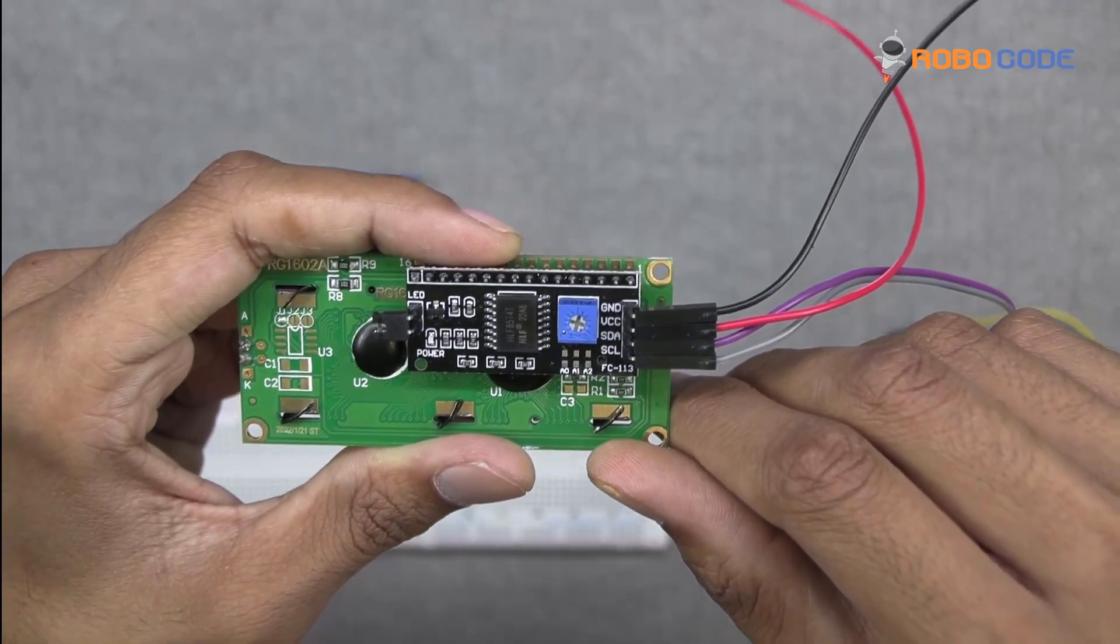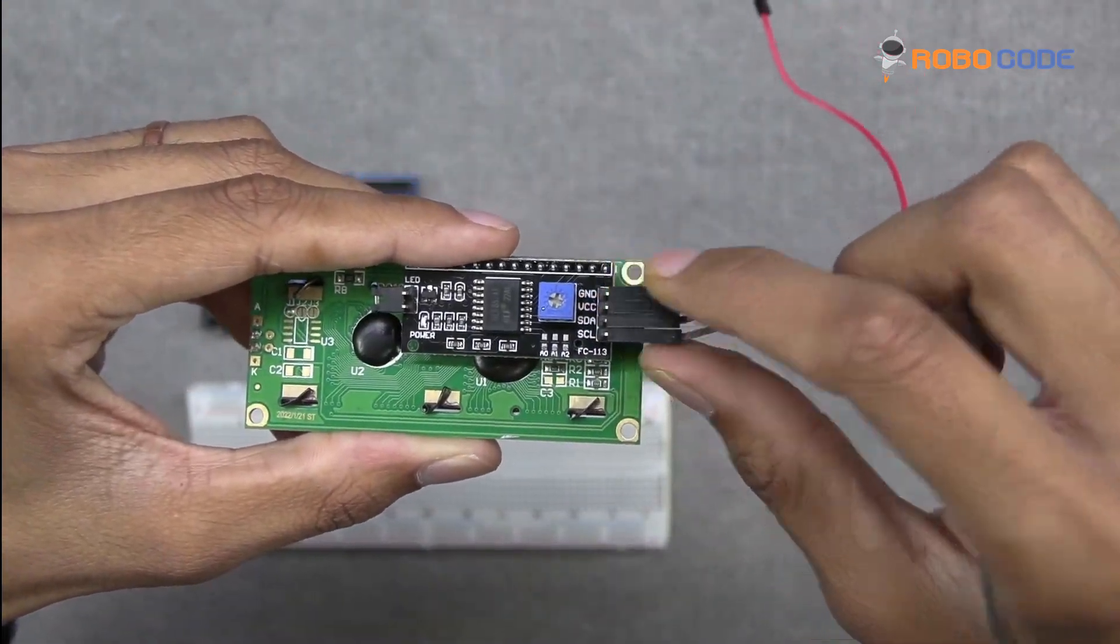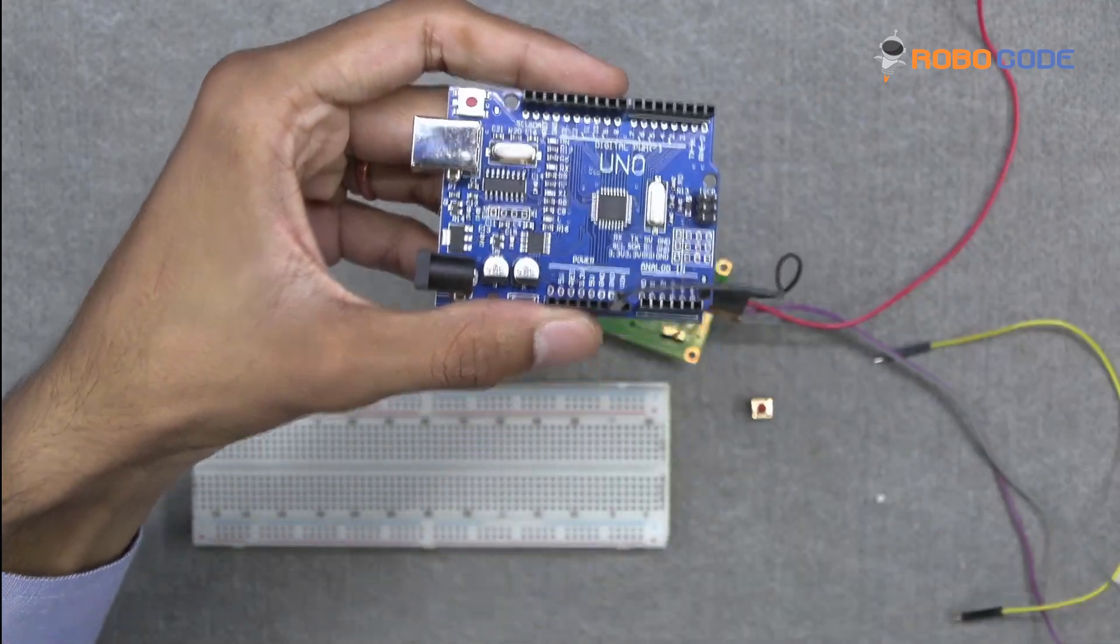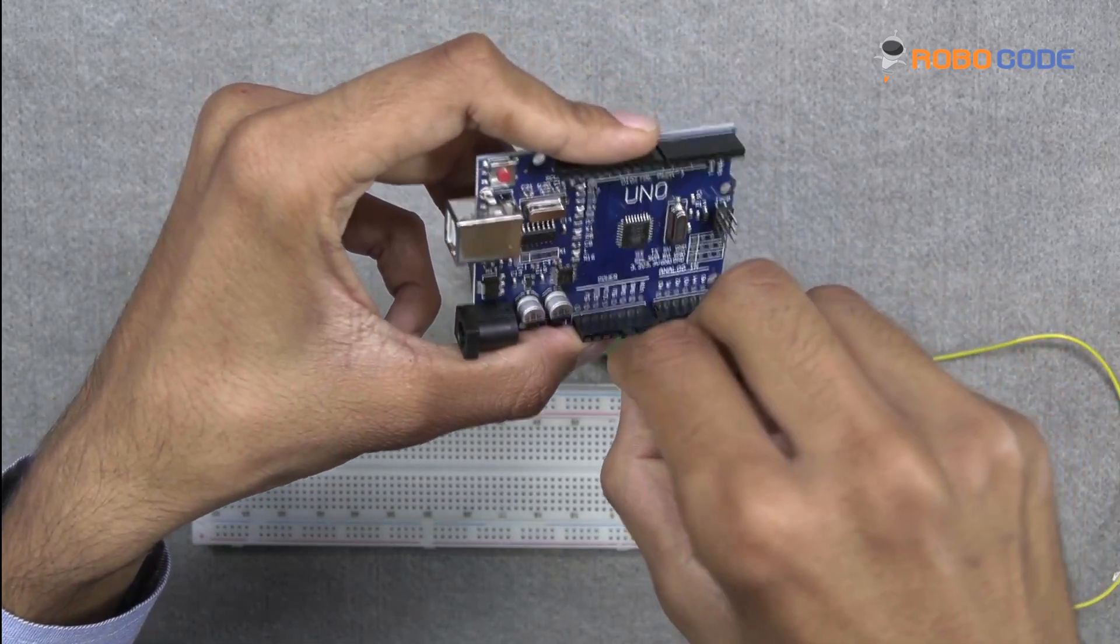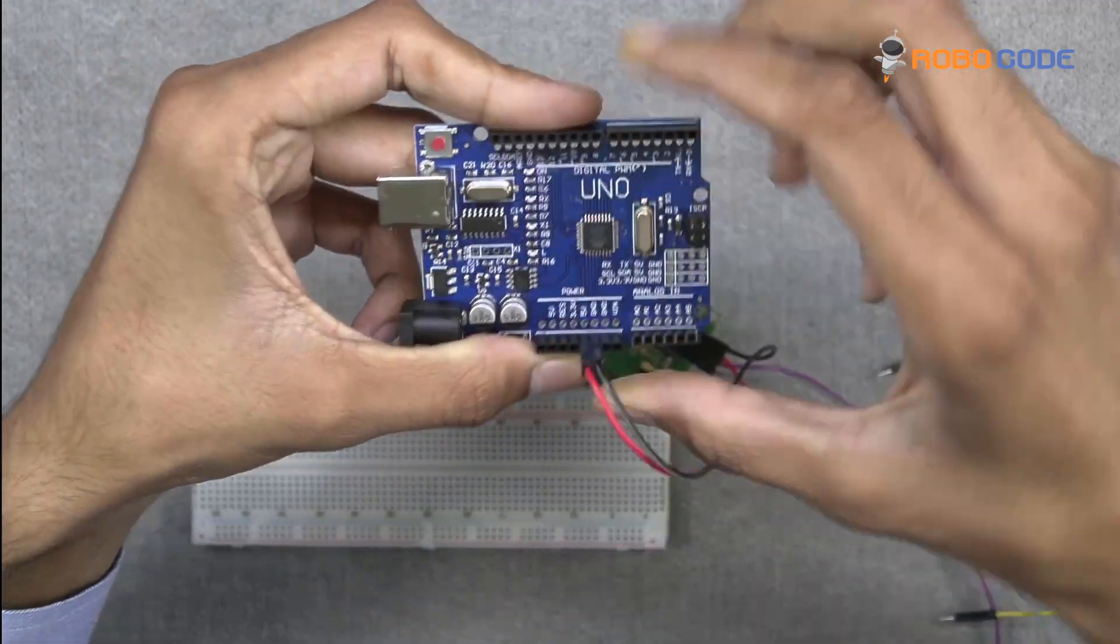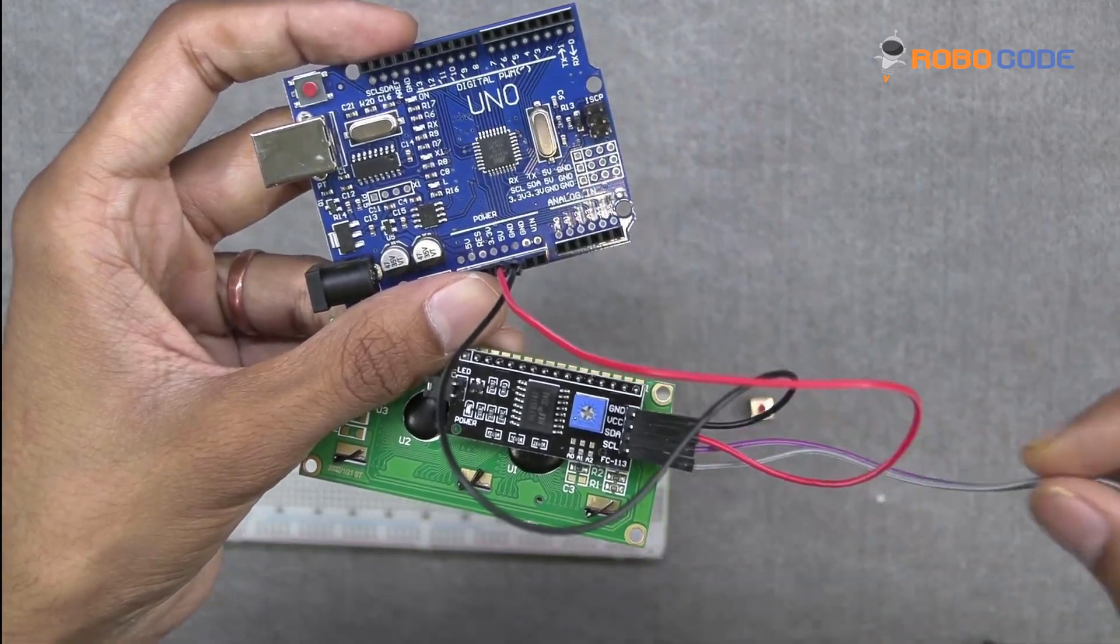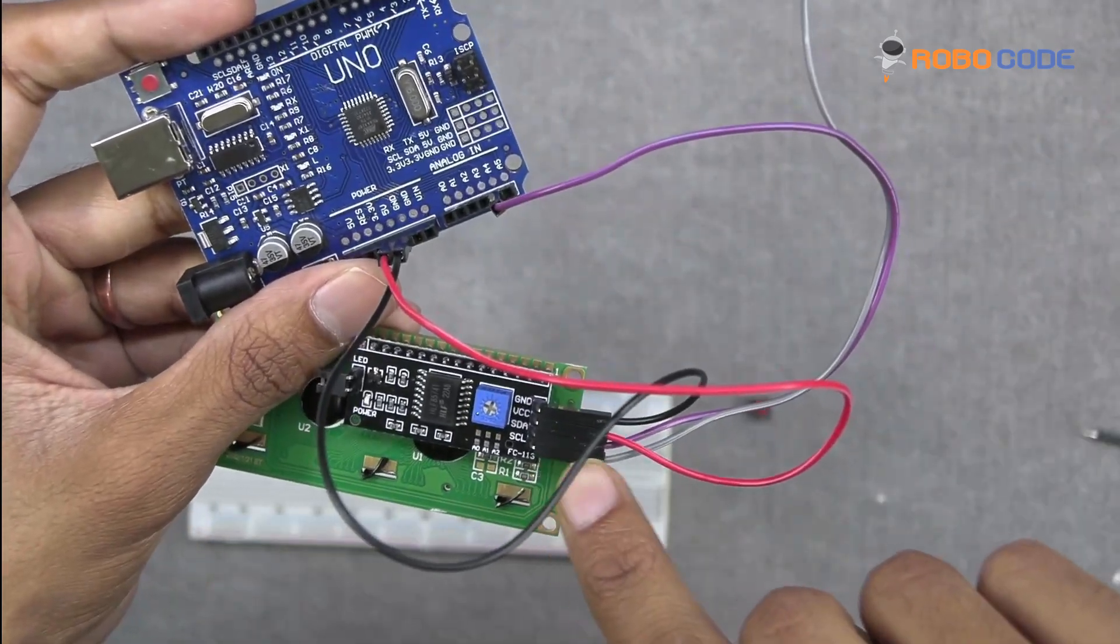The remaining side of the jumper wires will connect to the Arduino Uno board. We'll take the black wire and insert it where it says ground. Then we will take the red wire and insert where it says 5V. Similarly, purple wire to the A4 point and the grey wire to the A5 point.